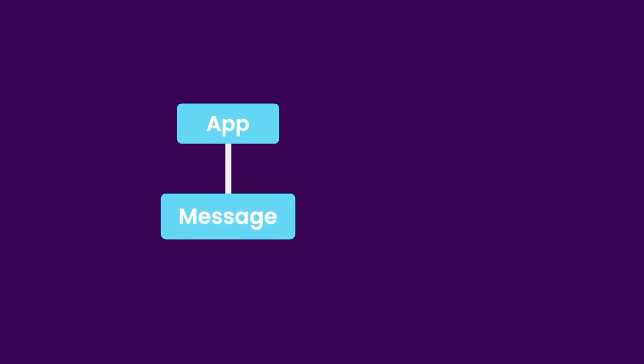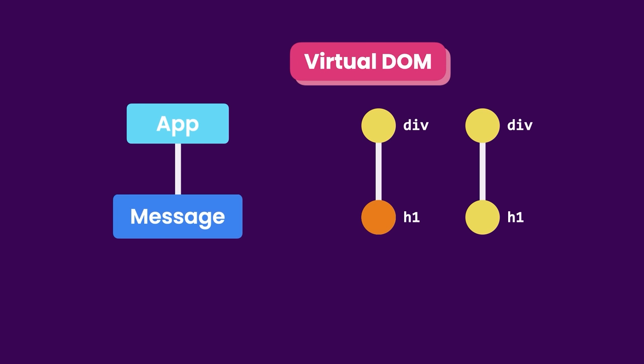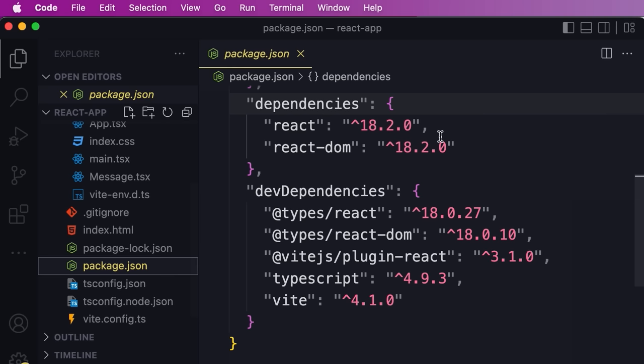Currently we have a component tree with the App being the root or top level component and the Message being a child. When our application starts, React takes this component tree and builds a JavaScript data structure called the virtual DOM. This virtual DOM is different from the actual DOM in the browser — it's a lightweight, in-memory representation of our component tree where each node represents a component and its properties. When the state or data of a component changes, React updates the corresponding node in the virtual DOM, then compares the current version with the previous version to identify nodes that should be updated, and then updates those nodes in the actual DOM.